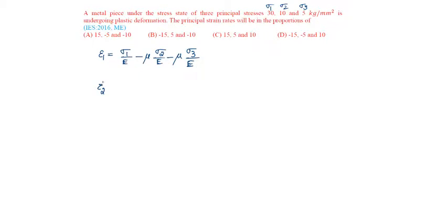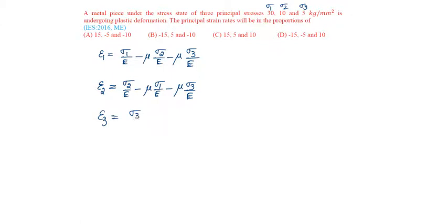Epsilon 2 will be sigma 2 by E minus mu into sigma 1 by E minus mu into sigma 3 by E. Whereas, epsilon 3 will be equal to sigma 3 by E minus mu into sigma 1 by E minus mu into sigma 2 by E.